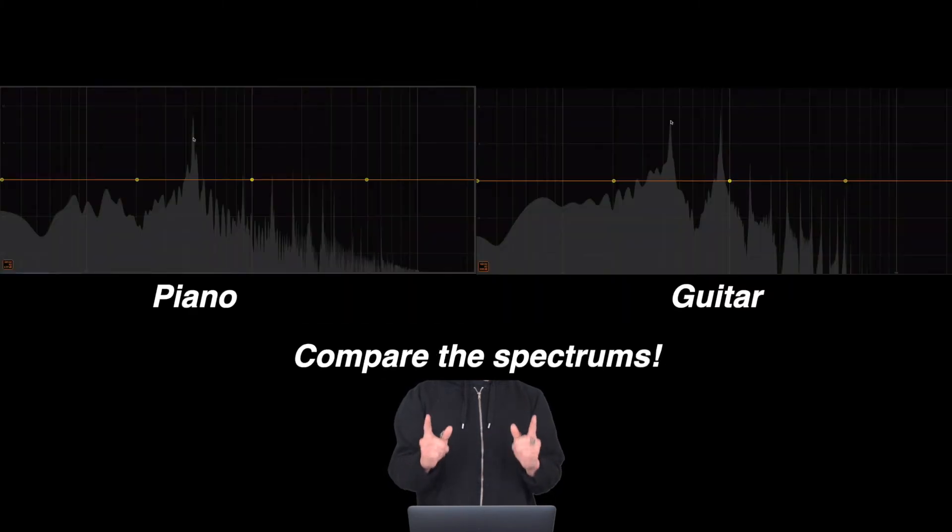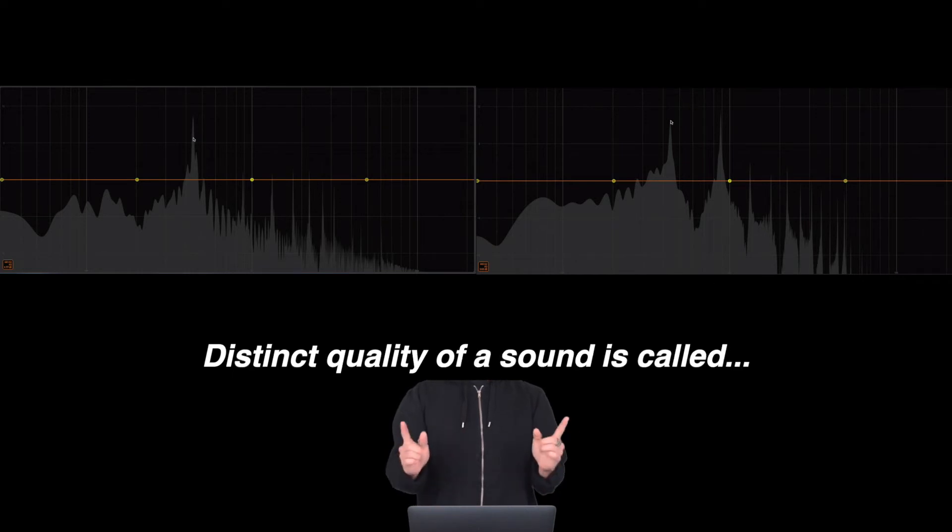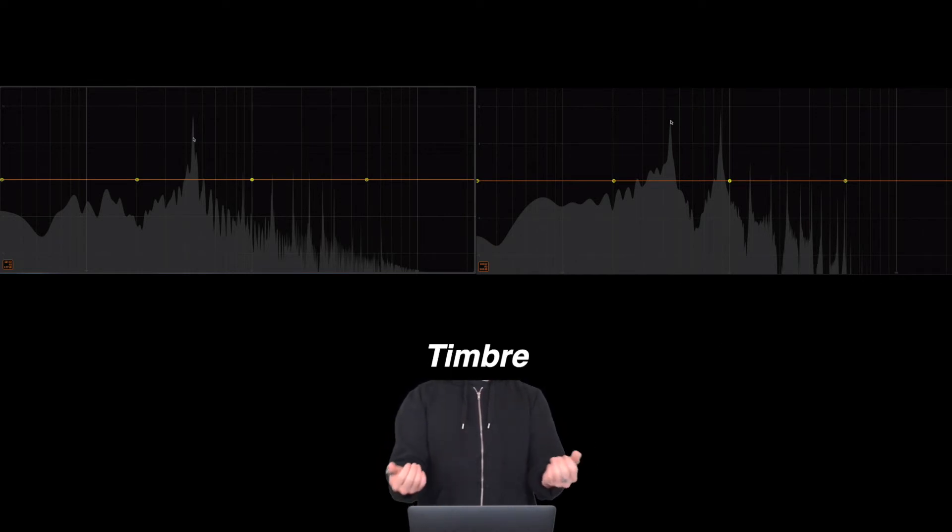This is because the overtones in each sound are unique. One obvious difference is the loudness differences of the overtones between the two instruments. This distinct quality of a sound is called a timbre.